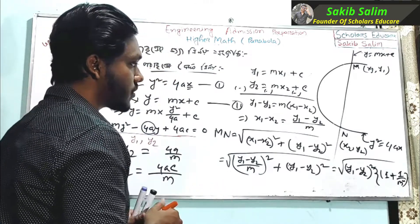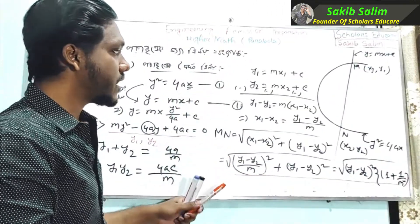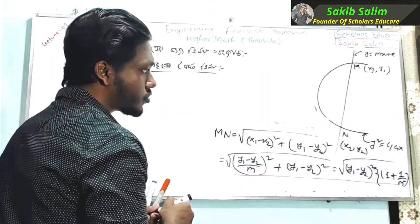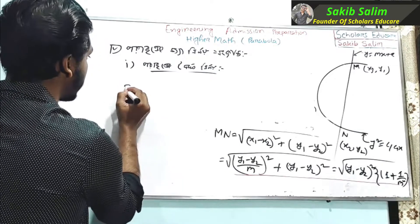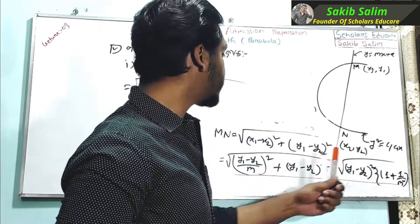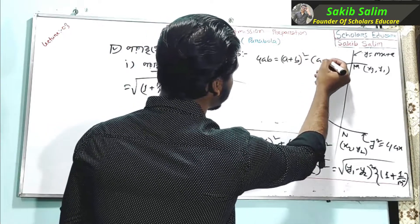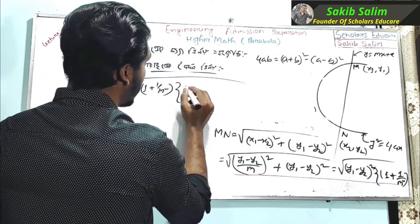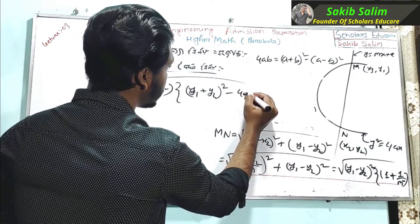So we will place the root of y1 minus y2 to the power square into 1 plus 1 divided by m squared. We will place root of y1 minus y2 squared, which gives us y1 plus y2 to the power square minus 4 times y1 times y2.